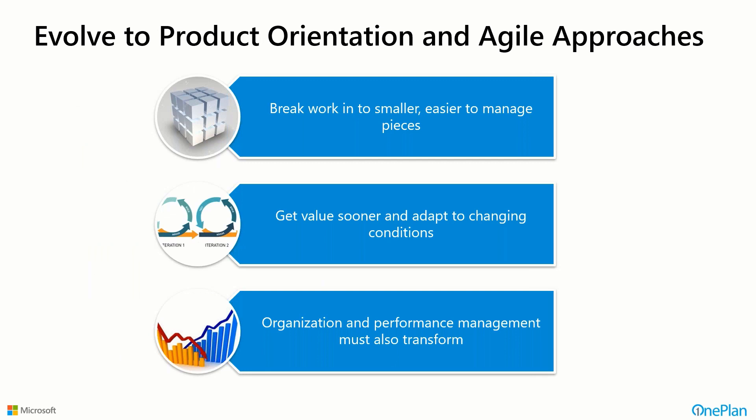Organizations are increasingly evolving toward a product orientation and more agile approaches, breaking work into smaller, more manageable chunks that are easier to deliver quickly. Iterative approaches allow us to get value to the customer sooner, and if things change, we can adapt and pivot as needed. Performance management must also transform — the way we used to look at things in traditional project and portfolio management may not be conducive anymore. We want metrics that drive the outcomes we're looking for.